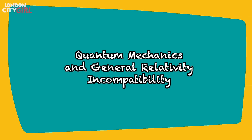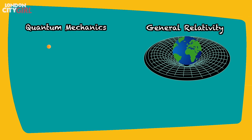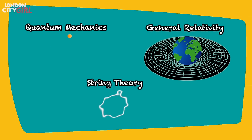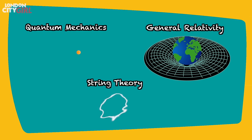Quantum Mechanics and General Relativity are two of the most successful theories in physics, but they are incompatible. Quantum mechanics describes space and time as being quantized, whereas General Relativity describes space and time as a smooth continuum. String theory attempts to resolve this incompatibility and is an attempt to find the elusive theory of everything that explains all the matter and forces in our universe — but that in itself is a whole other video.